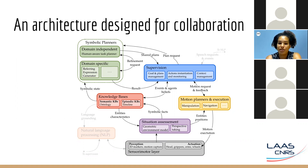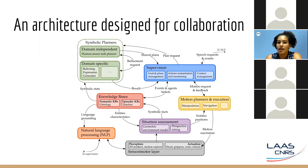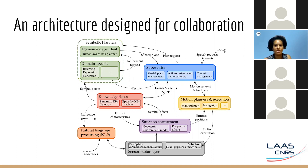The symbolic facts generated by the situation assessment are sent to the knowledge bases, representing both the robot's knowledge and the estimated human knowledge. We distinguish two kinds of knowledge bases: the semantic knowledge base, containing facts fed offline such as 'a table is a support,' and the episodic knowledge base, containing all facts generated online coming from the situation assessment. We have seen an overview of the architecture. Now we are going to present each component in more detail, starting with the knowledge base.